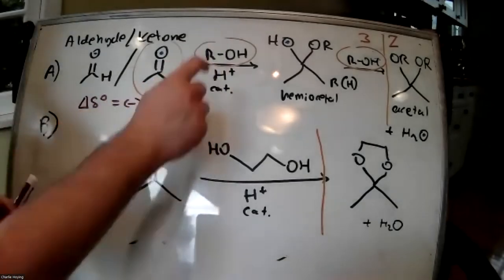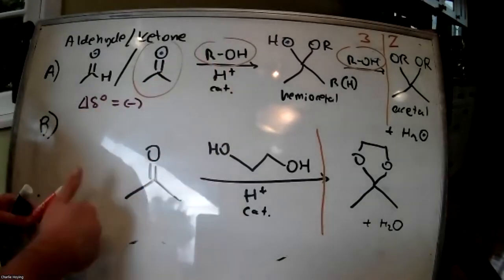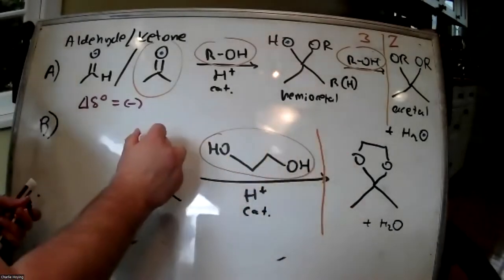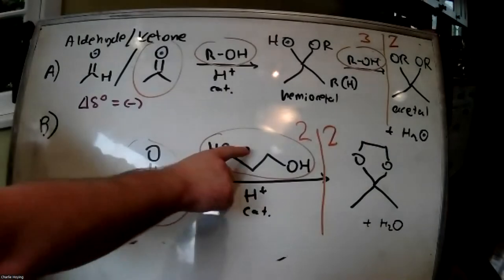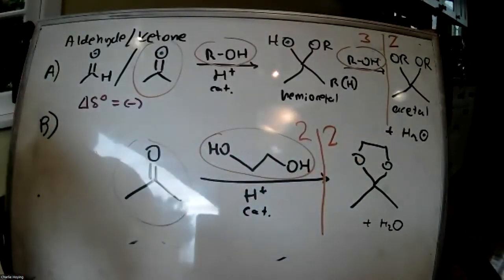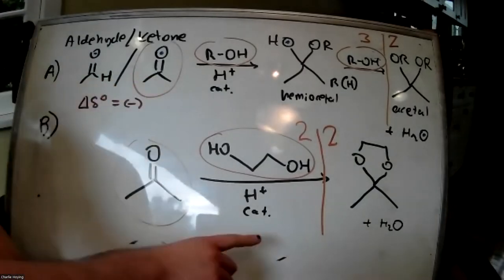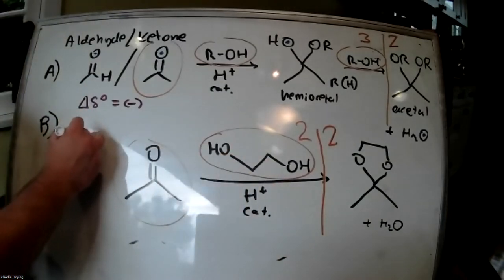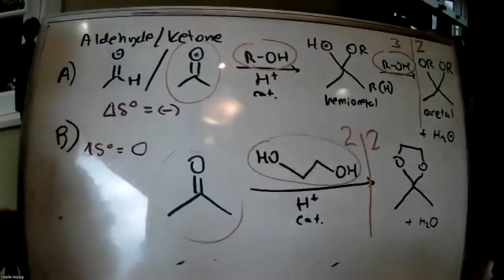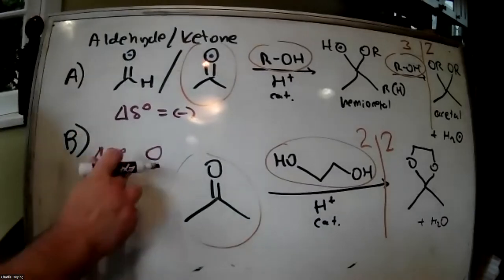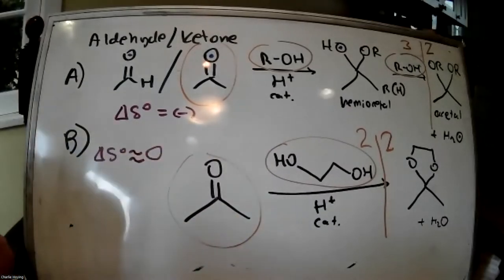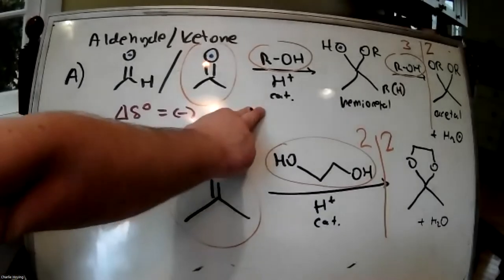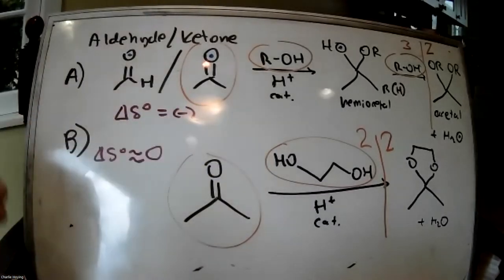Reaction A has a negative delta S. Since reaction B used a diol and formed a cyclic acetal, we have two molecules on the left and two on the right — so it's around zero delta S. That's why the cyclic diol version is more entropically favorable and is often used as a protecting group for aldehydes and ketones. The non-cyclic version might require reflux and higher temperatures to proceed.